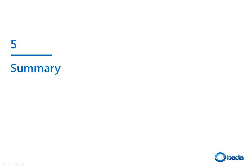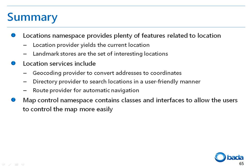We've reached the end of the session. Let's summarize what we've discussed. The Locations namespace provides plenty of features related to location — the Location Provider yields the current location and Landmark Store is the set of interesting locations. Location Services gives features like Geocoding Provider to convert addresses to coordinates, Directory Provider to search locations in a user-friendly manner, and Route Provider for automatic navigation. The MapControl contains classes and interfaces to allow users to control the map easily.